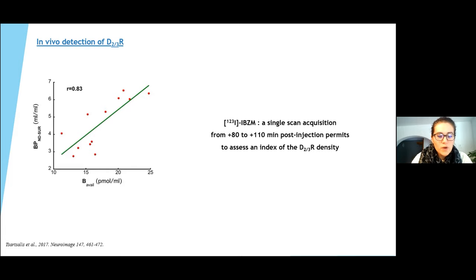In addition, to obtain a representative index, we have developed a partial saturation protocol to produce a Scatchard plot and thus to estimate both the density and the affinity of D2/3R through a single dynamic scan. We perform this approach with two dopaminergic receptor ligands: the IBZM and the epidepride.